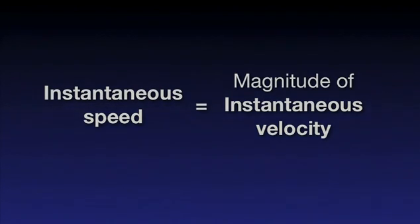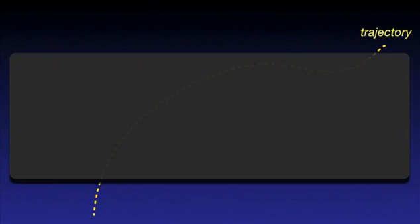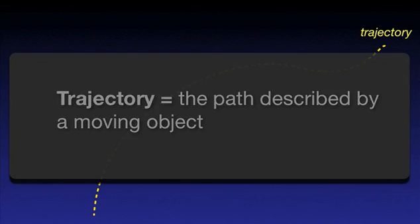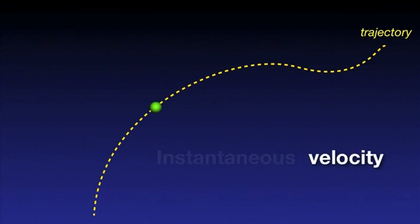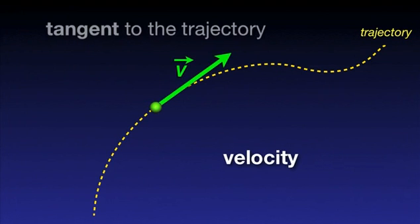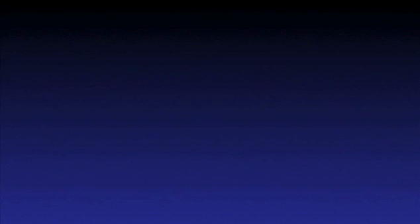What about the direction of the instantaneous velocity vector? Let's consider again a green ball in motion. Its trajectory is shown by the dashed line. For those who don't know what trajectory means, here is a quick definition: it is the path described by a moving object. Instantaneous velocity, or simply velocity, has its direction tangent to the trajectory. The vector nature of velocity is indicated by an arrow above the symbol of the quantity. The word instantaneous is often omitted — when we talk about average velocity, we specifically use the word average, whereas when we speak about instantaneous velocity, we tend to call it simply velocity.